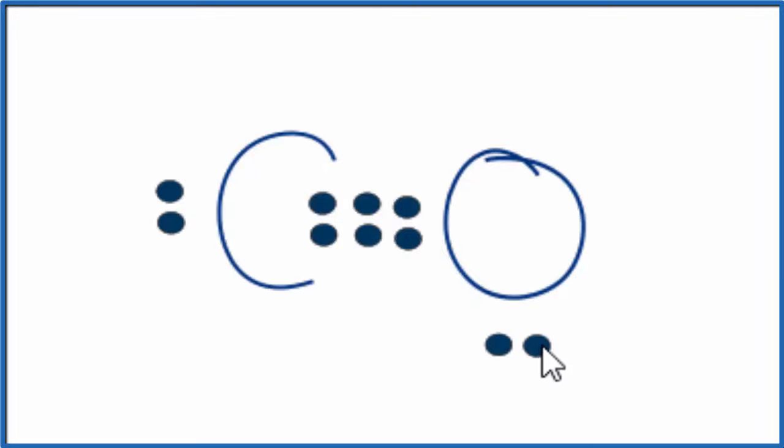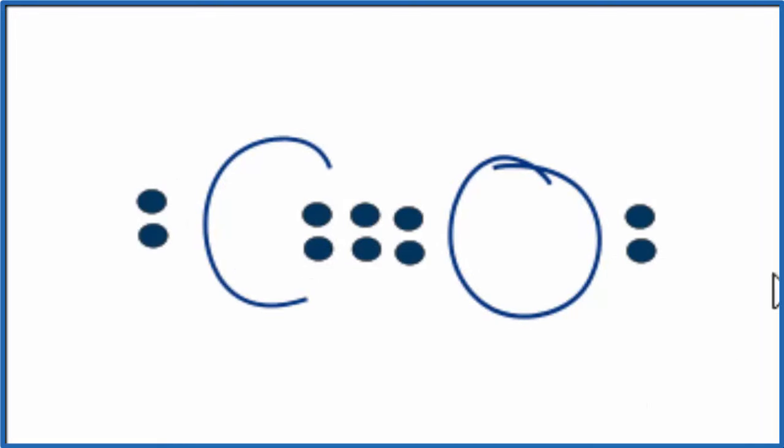Let me move these up here just for symmetry sake. And this is the Lewis structure for carbon monoxide. Sometimes you'll see it drawn with these three pairs of electrons as lines like this.